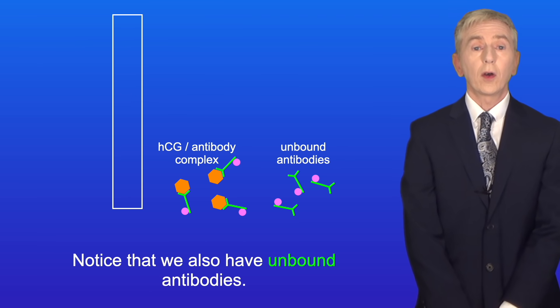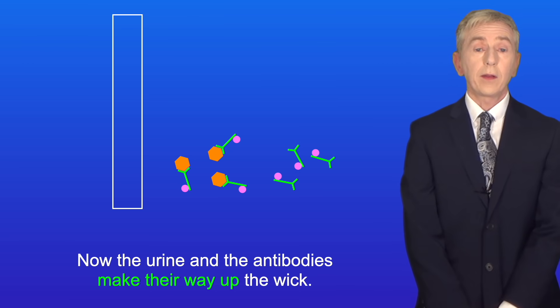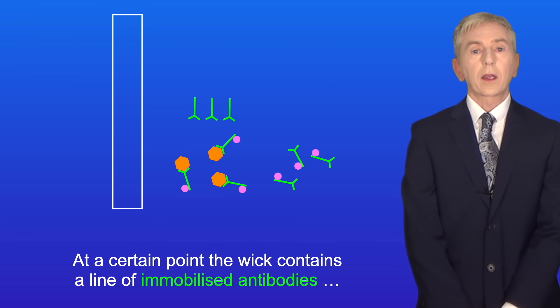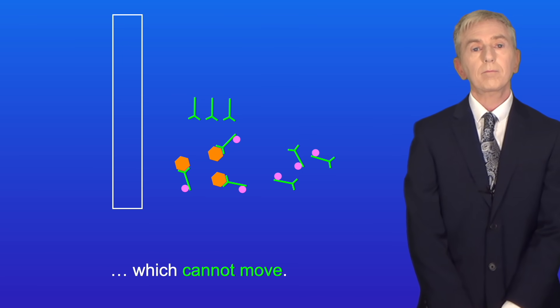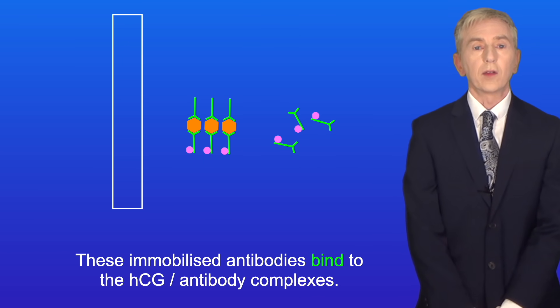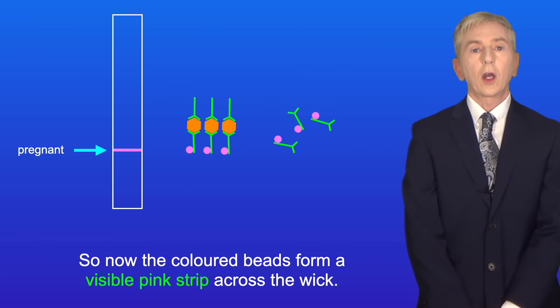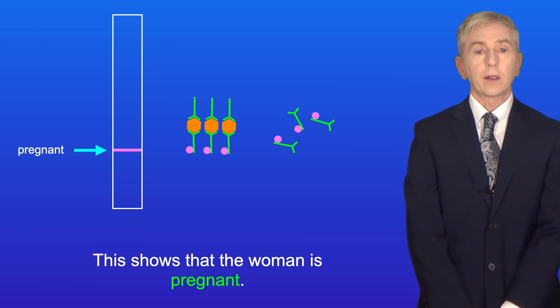Notice that we also have unbound antibodies. Now the urine and the antibodies make their way up the wick. At a certain point, the wick contains a line of immobilized antibodies which cannot move. These immobilized antibodies bind to the HCG antibody complexes. So now the colored beads form a visible pink strip across the wick, and this shows that the woman is pregnant.